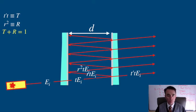Light will be reflected again as R squared T E sub i and light will be transmitted again as R squared T prime T E sub i and so on.